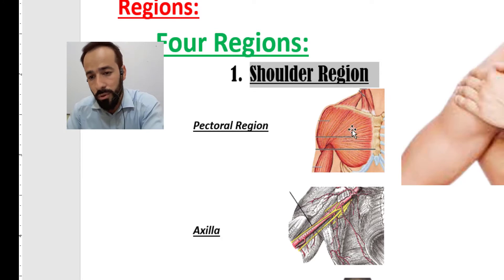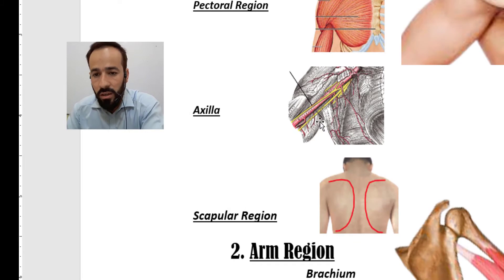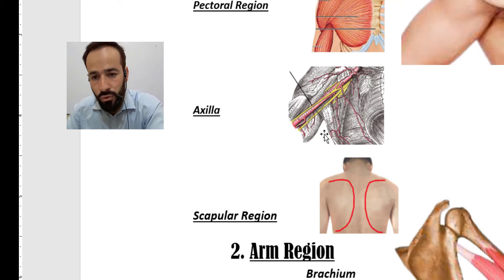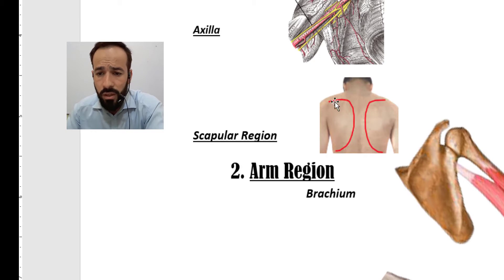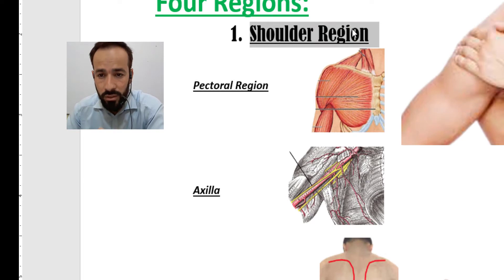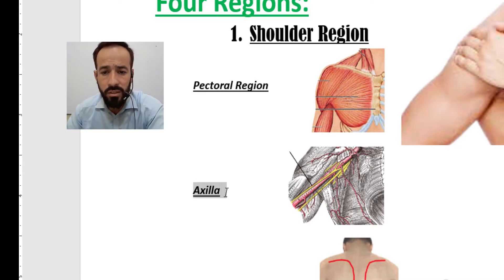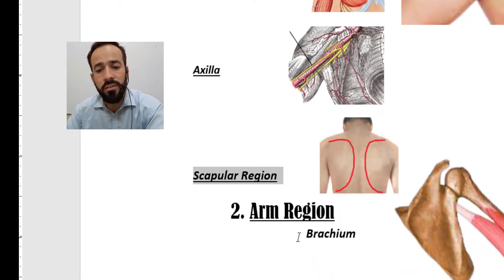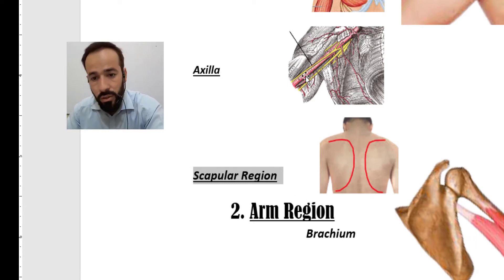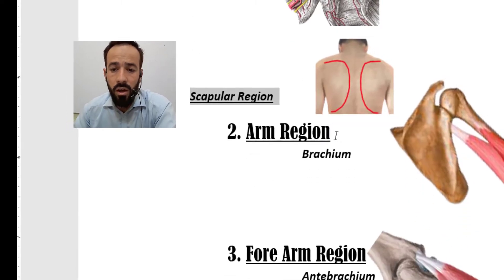You can see here — following the pointer of the mouse — this is the pectoral region. Beneath the brachium medially you have the axilla or axillary region. And then there is the scapular region shown here. So the shoulder region is subdivided into the pectoral region, the axillary region, and the scapular region.